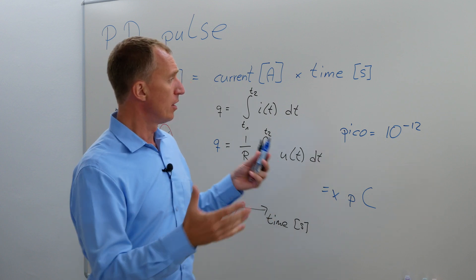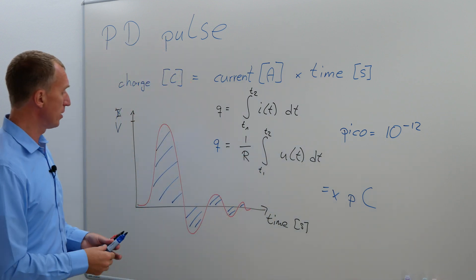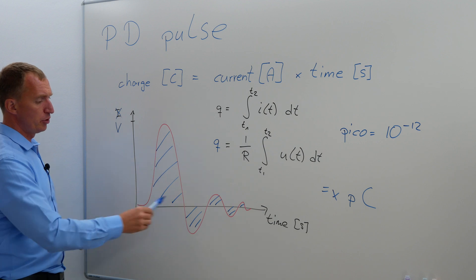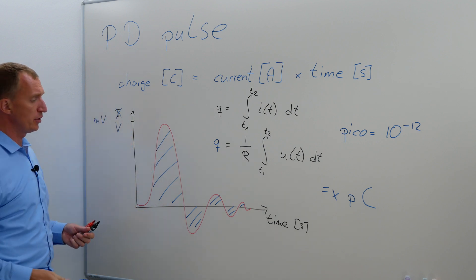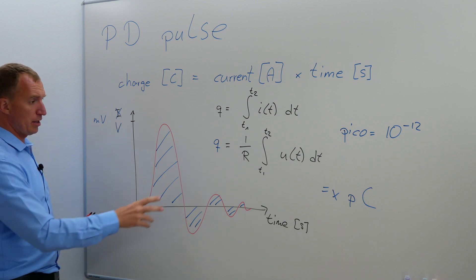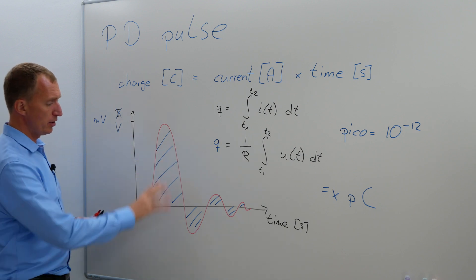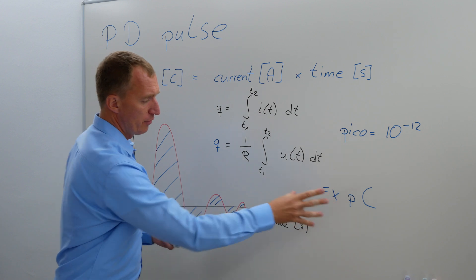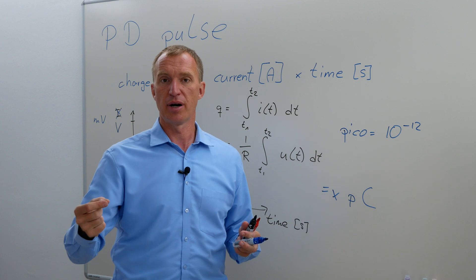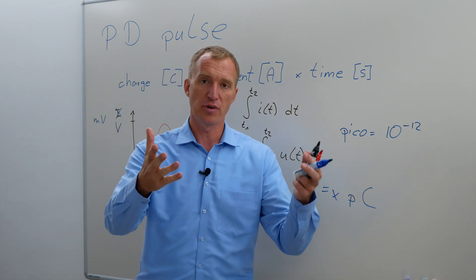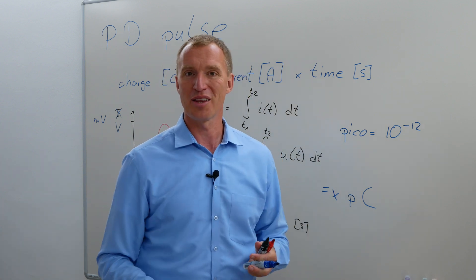So to sum up, a partial discharge pulse, the electrical pulse looks a little bit like that. We do an integration, otherwise we would only have a millivolt value. But the standards usually talk about a charge value. So we do the area below the curve, we come up with hopefully a picocoulomb value. And we do this for every single pulse happening. So thank you very much for watching and hopefully see you in another video.